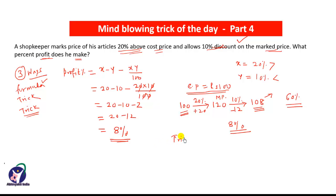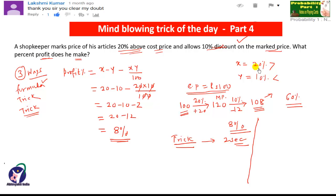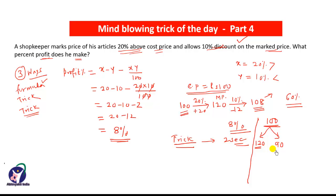Now the third trick — and this gives you the answer in two seconds. If the actual price is ₹100 and 20% is increased, it becomes ₹120. If a 10% discount is given on ₹100, it becomes ₹90. So just drop the zeros: take 12 and 9 and multiply — 12 × 9 = 108. Then 108 − 100 = 8%.